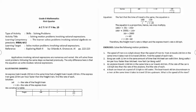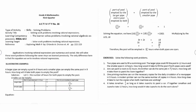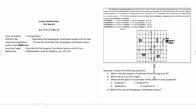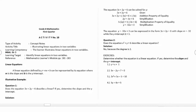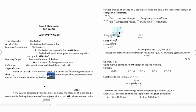Activity number sixteen is solving work problems involving rational expressions. Activity number seventeen is describing the rectangular coordinate system and its uses. Activity number eighteen is illustrating linear equations in two variables. Activity number nineteen is illustrating the slope of a line.